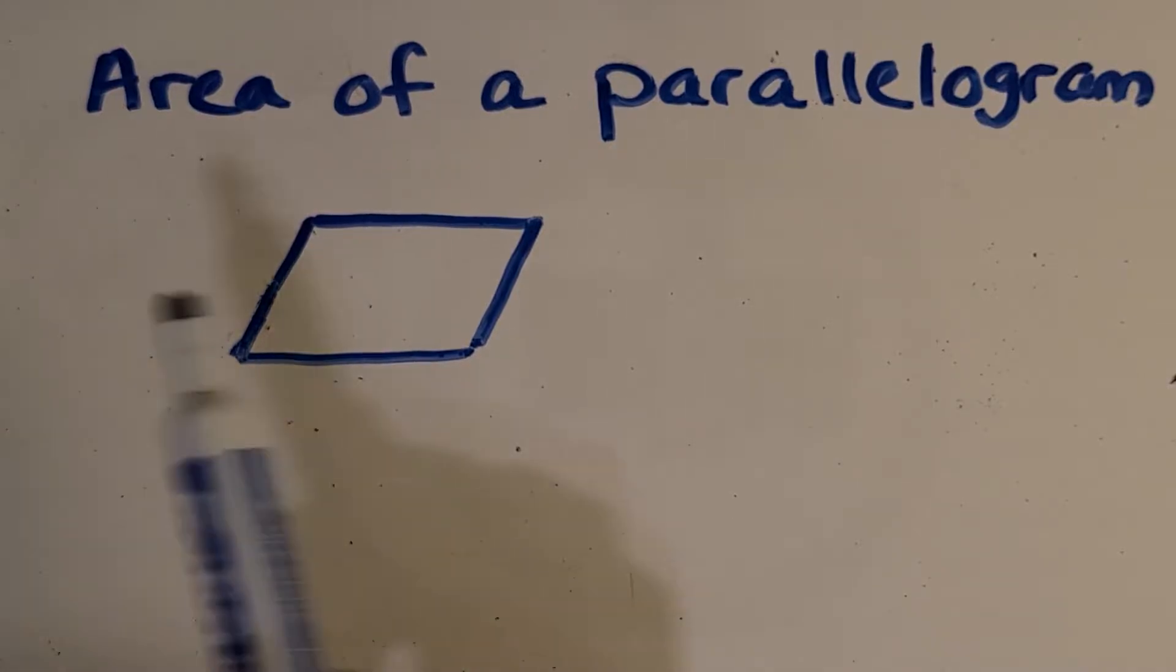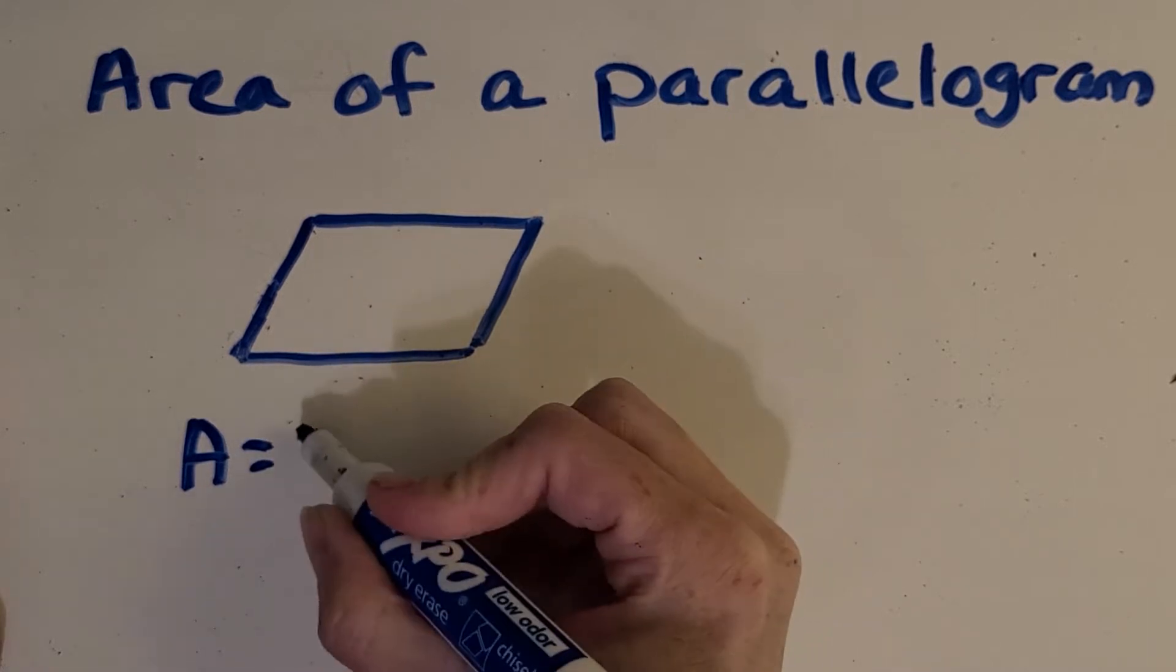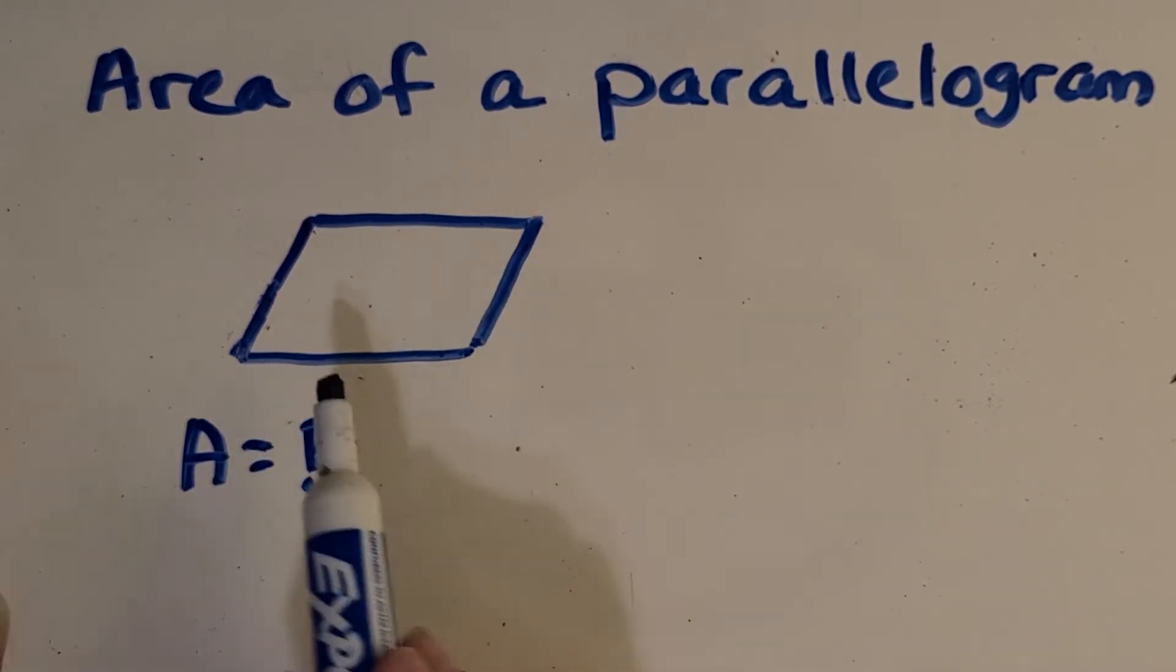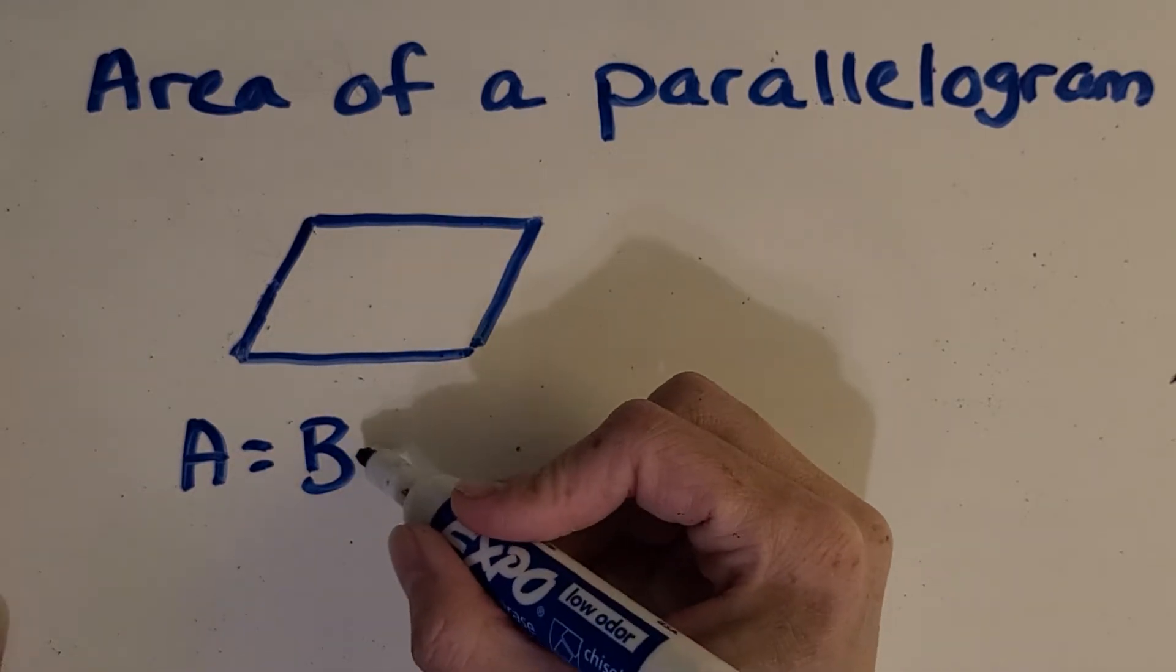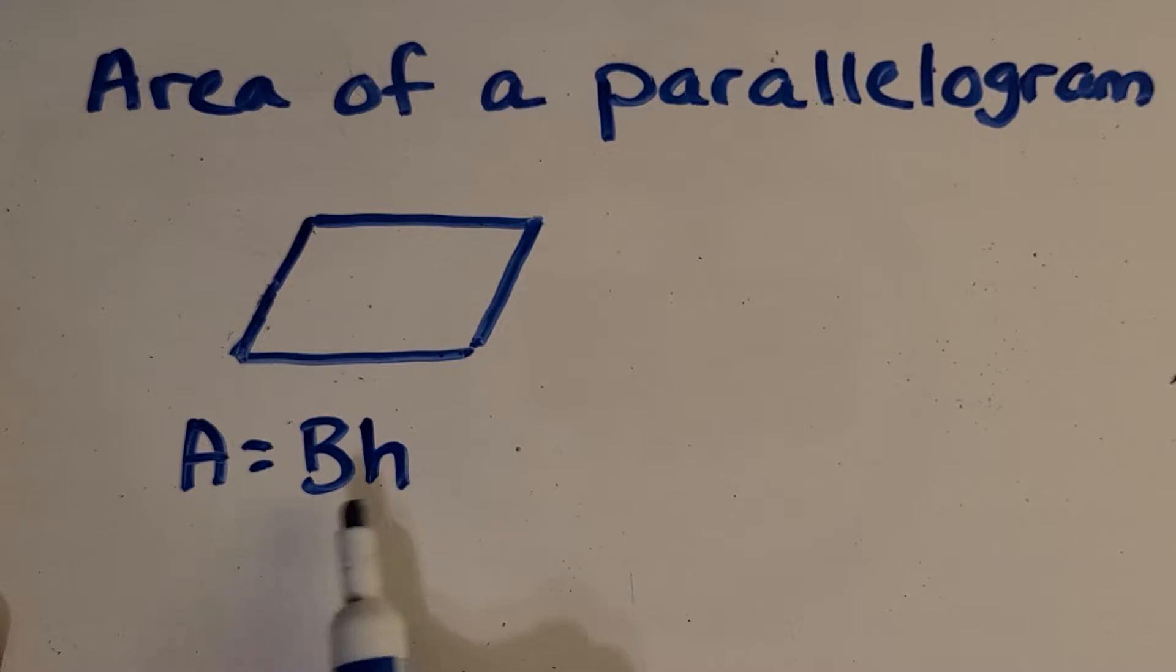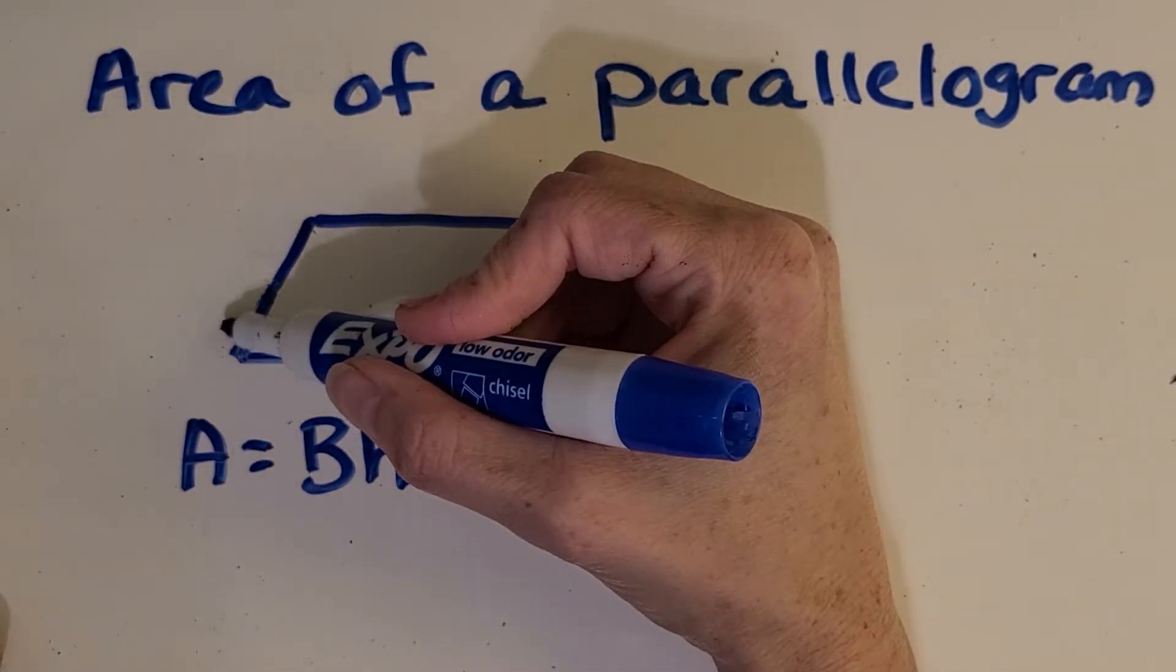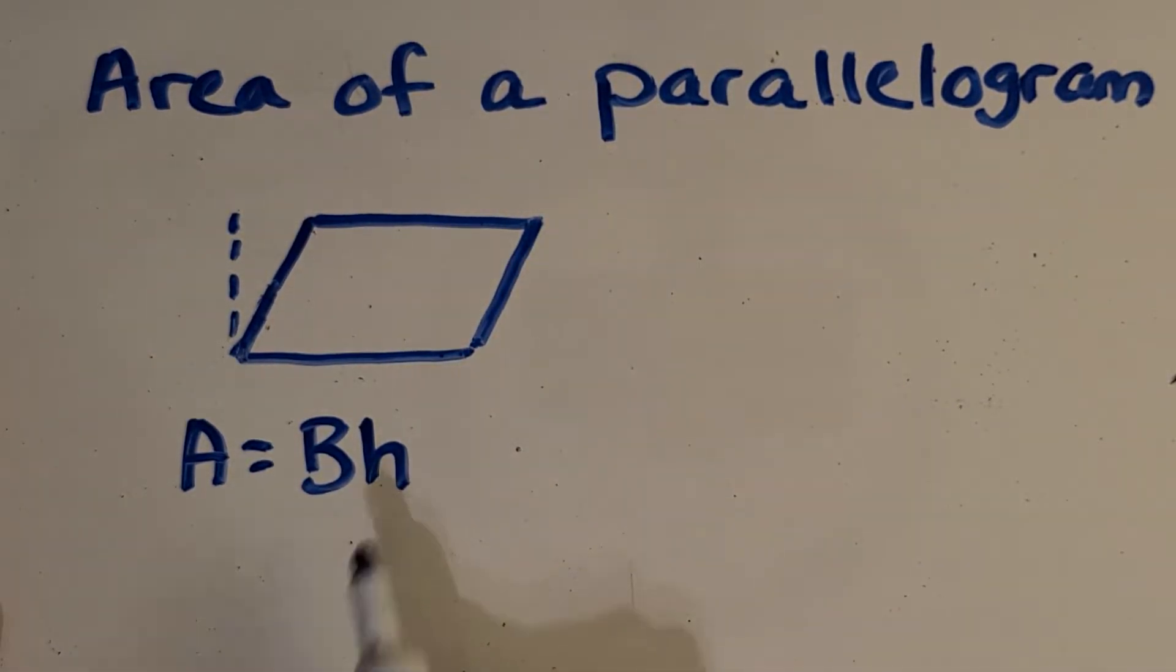All right, so first we're going to learn about the area of a parallelogram. And as long as we have the base, the area equals the base of the parallelogram, so this length right here, times the height. If I put bh right next to each other, it means to multiply. So as long as I have the height also, I can multiply them and get the area.